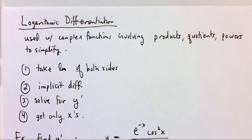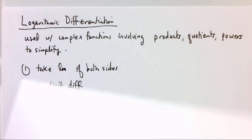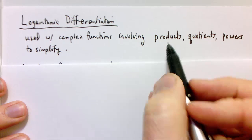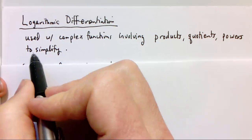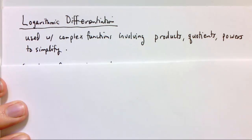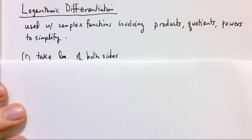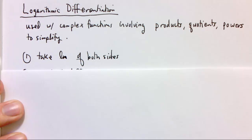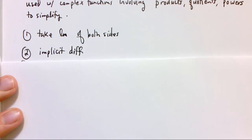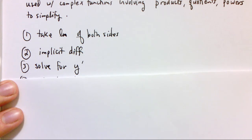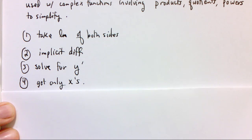After those examples of differentiating with logarithms, we're going to look at logarithmic differentiation — a technique for working with complex functions that involve products, quotients, and powers. We can often make these derivatives simpler by using a logarithm first. The steps are: take the natural log of both sides, differentiate that expression implicitly, then solve for y prime. Finally, our answer may involve y's, but we can substitute the original formula to convert it to an expression in x only.